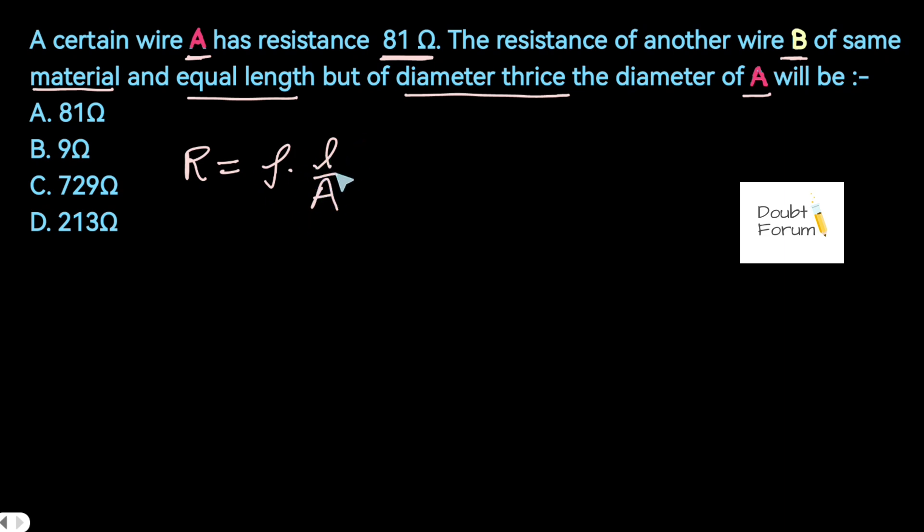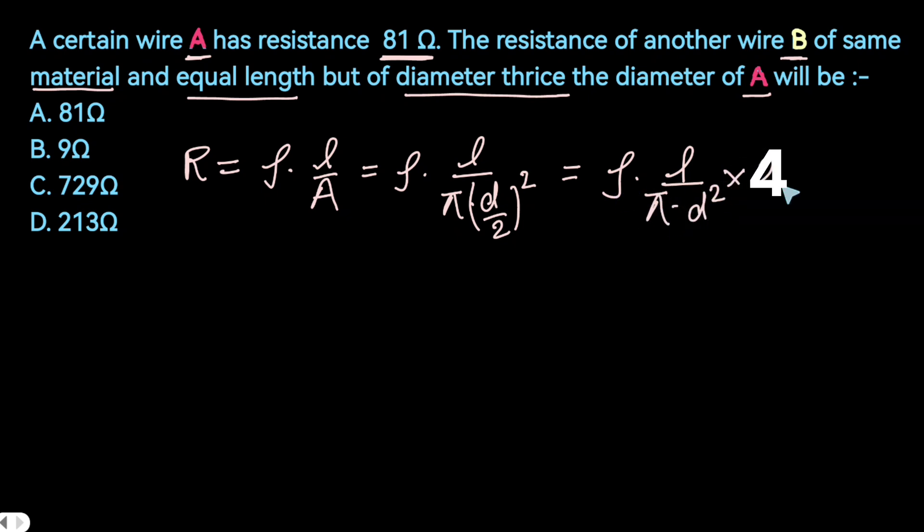In this question, area of cross section is not given to us but diameter is given. So in place of area of cross section we can write pi times d over 2 squared. So the value of resistance in this case would become rho L upon pi d squared, and this 2 would be in the numerator. So this is the formula of resistance.